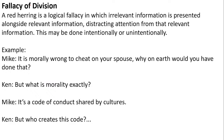Red herring fallacy: irrelevant information is presented alongside relevant information, distracting attention from the relevant point. Example: Mike says 'It is morally wrong to cheat on your spouse — why would you have done it?' Ken responds 'What is morality exactly?' Mike says 'It is a code of conduct shared by cultures.' Ken asks 'Who creates this code?' Ken is distracting attention from the important point being discussed — this is red herring fallacy.